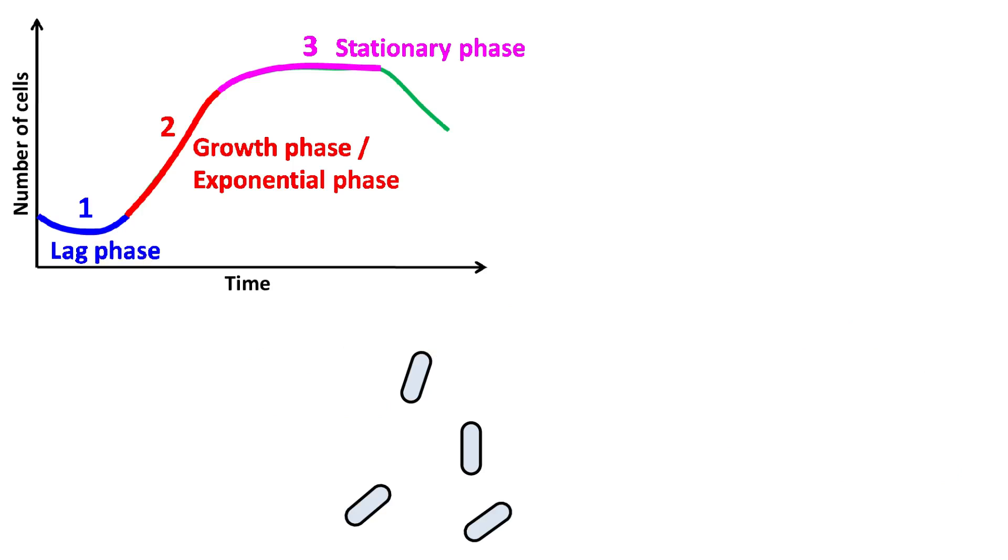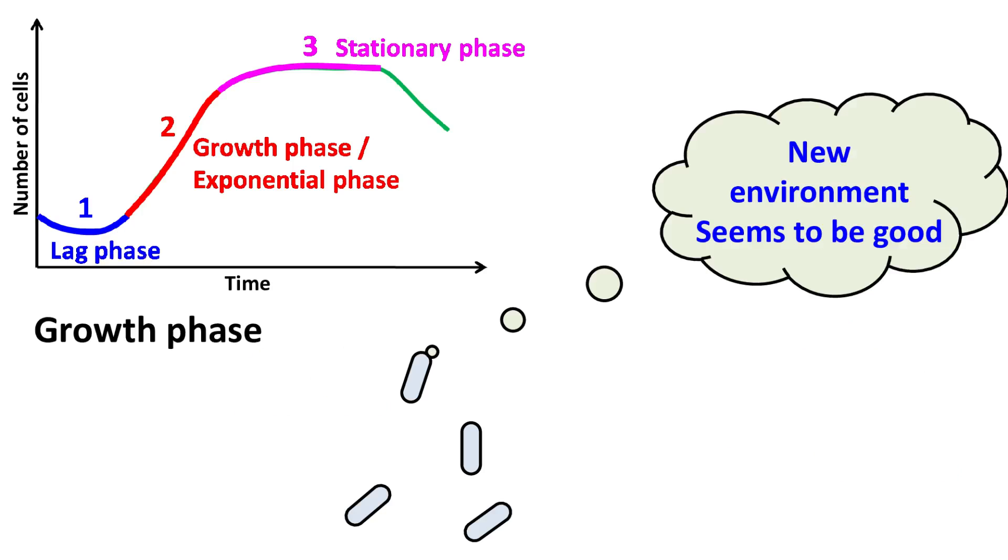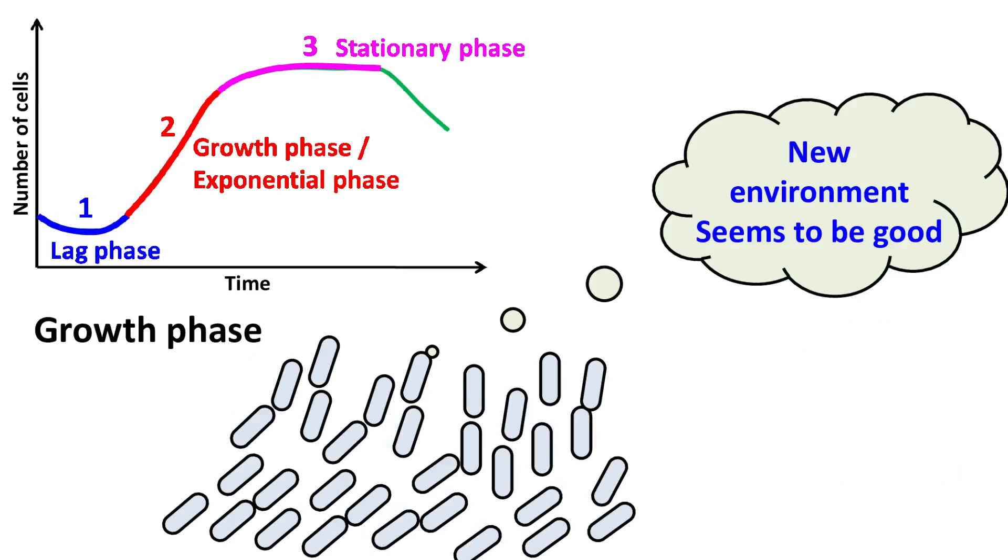When the cells eventually become adjusted to new environment, they begin to divide at a rapid rate. This stage of rapid cell division is known as the growth phase or the exponential phase.